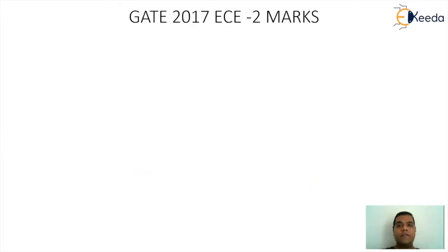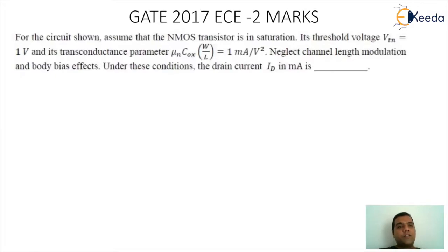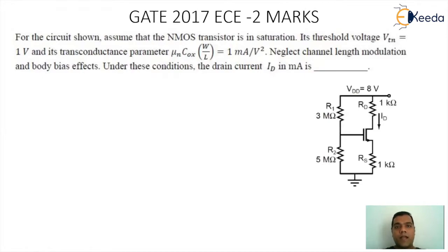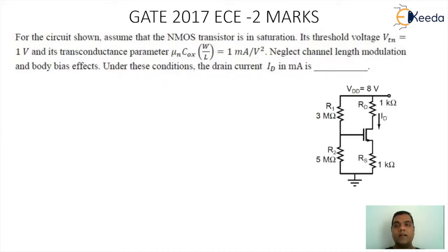Let's go for the question. This is from the GATE 2017 EC paper and the question carries two marks. The question says: for the circuit shown, the NMOS transistor is in saturation. The threshold voltage VTN is 1V and the transconductance parameter μn·Cox·(W/L) = 1 mA per volt square. Neglect channel length modulation and body bias effects. Find the drain current ID in mA.